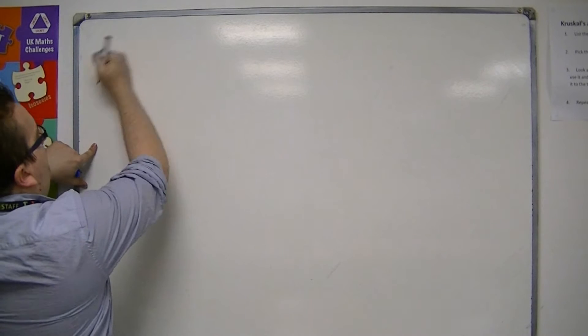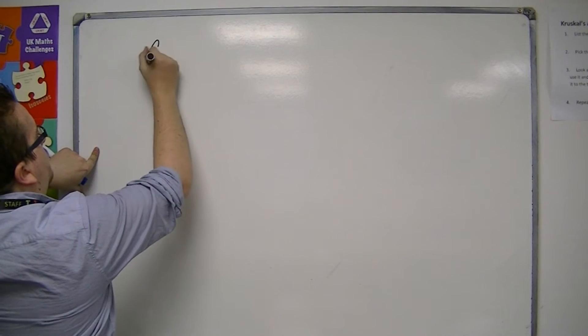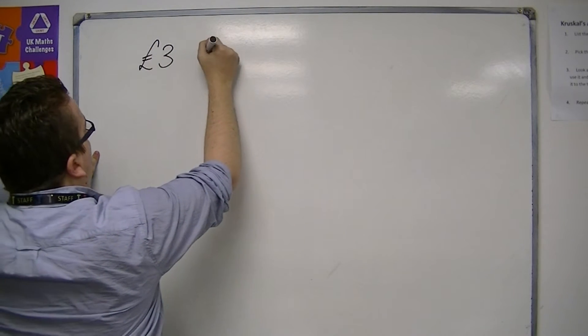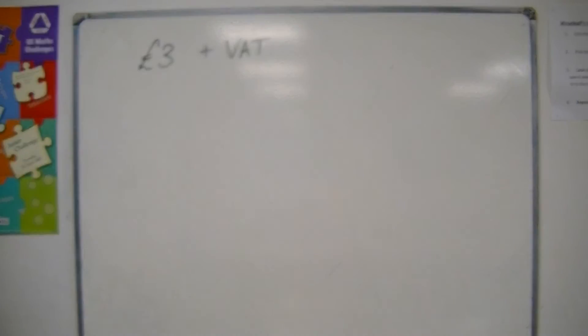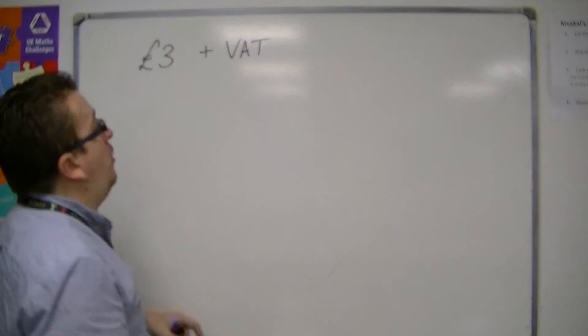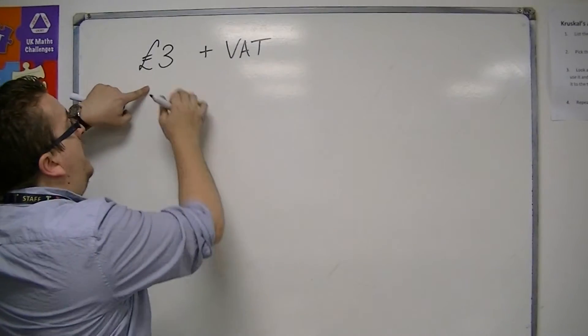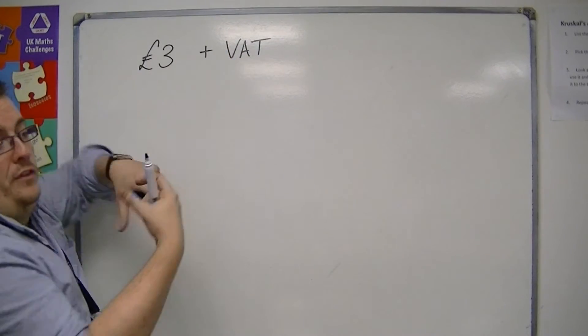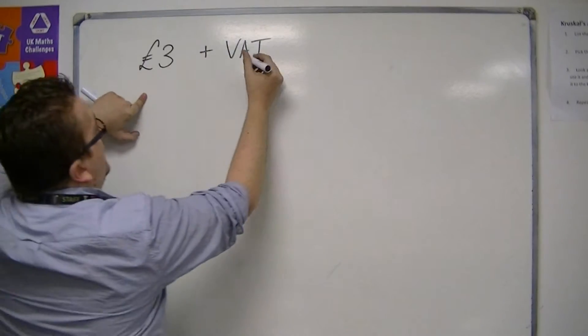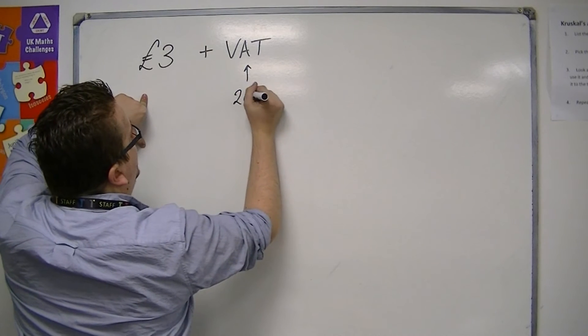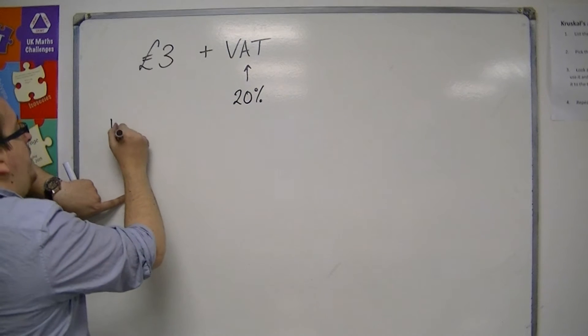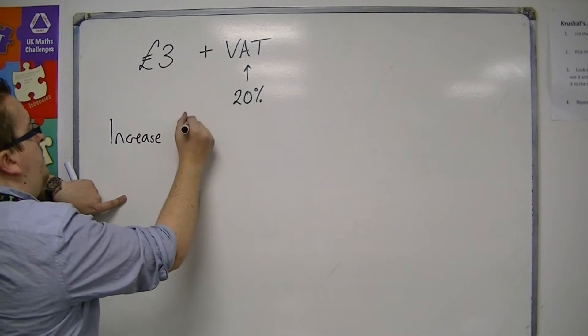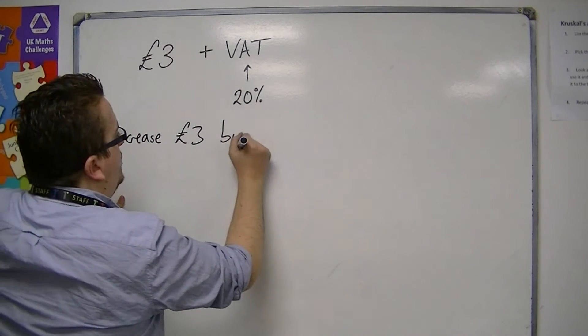When you're looking at something like £3 plus VAT, that is then added on top. The shop will sell an item at £3 plus the VAT price, so you'll pay for both. Now, if VAT is set at 20%, what that means is that we're adding another 20% on. We're increasing £3 by 20%.